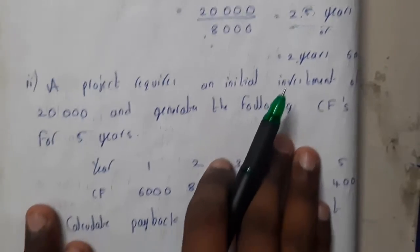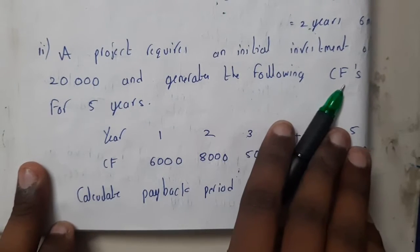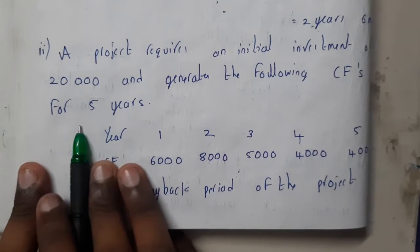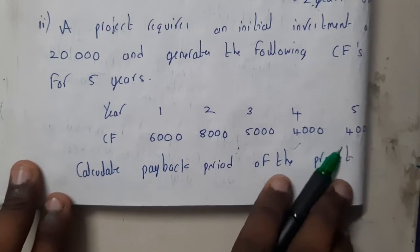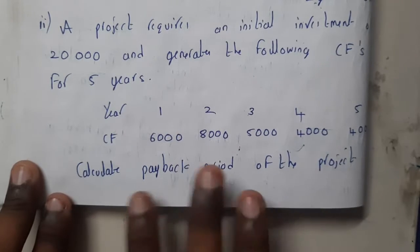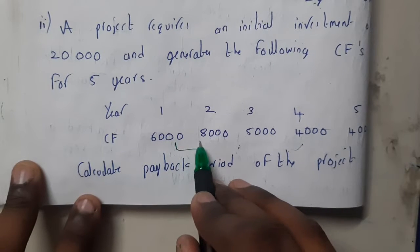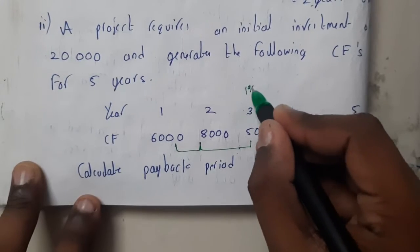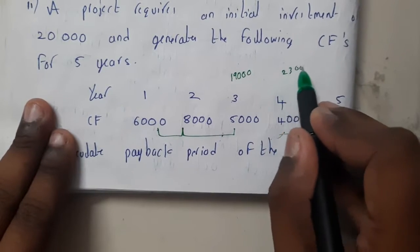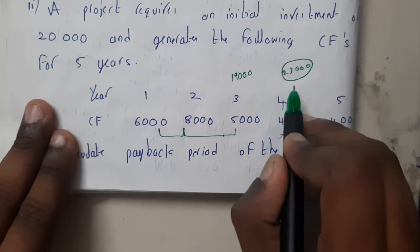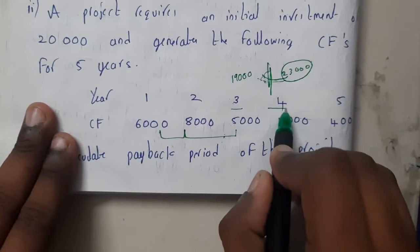In the second example, a project requires an initial investment of twenty thousand and generates the following cash inflows over five years: Year 1 – six thousand, Year 2 – eight thousand, Year 3 – five thousand, Year 4 – four thousand, Year 5 – four thousand. Adding them cumulatively: after Year 2 we have fourteen thousand, after Year 3 we have nineteen thousand. We still need one thousand more to reach twenty thousand, and Year 4 gives four thousand — so the payback period is between three and four years.